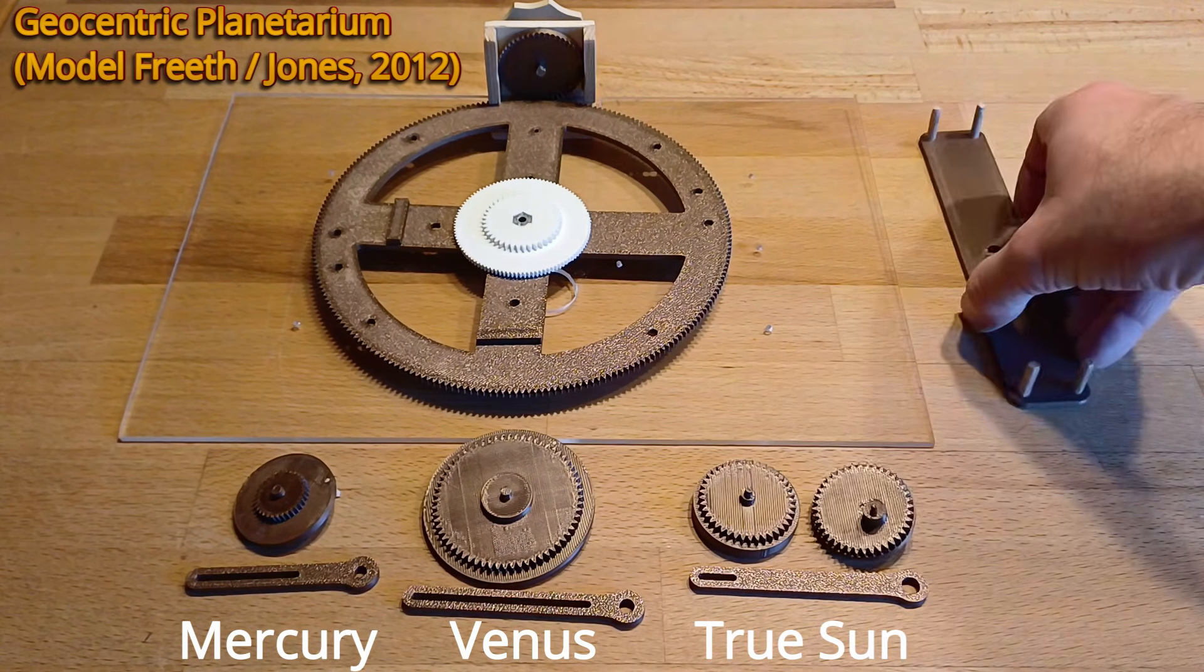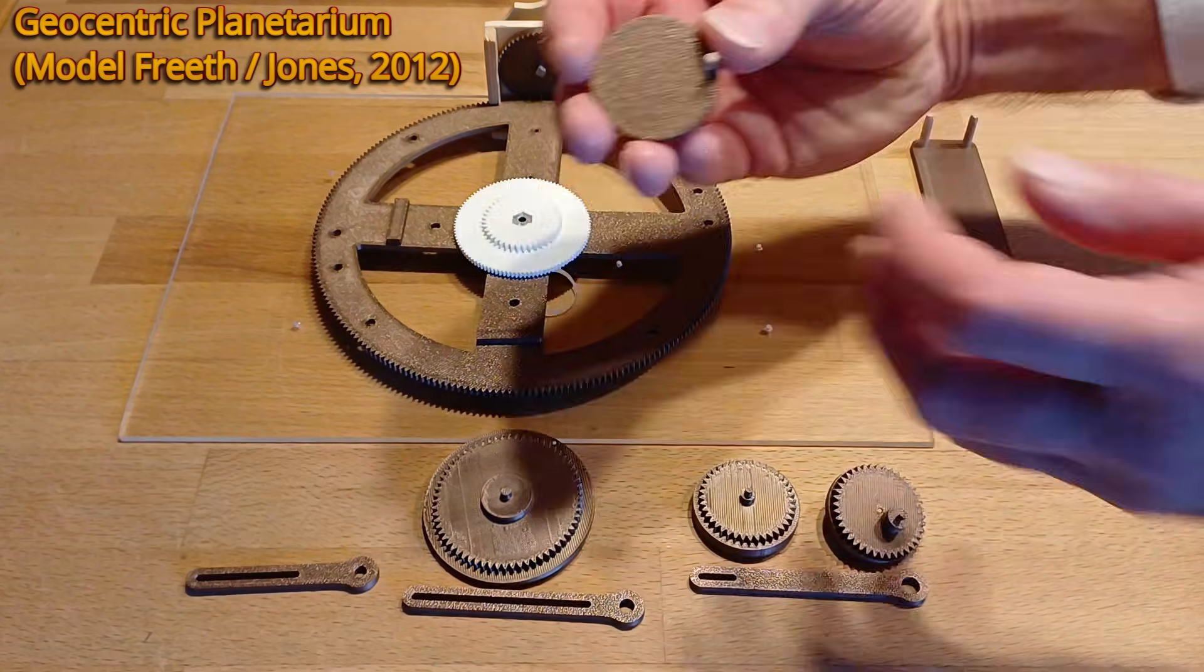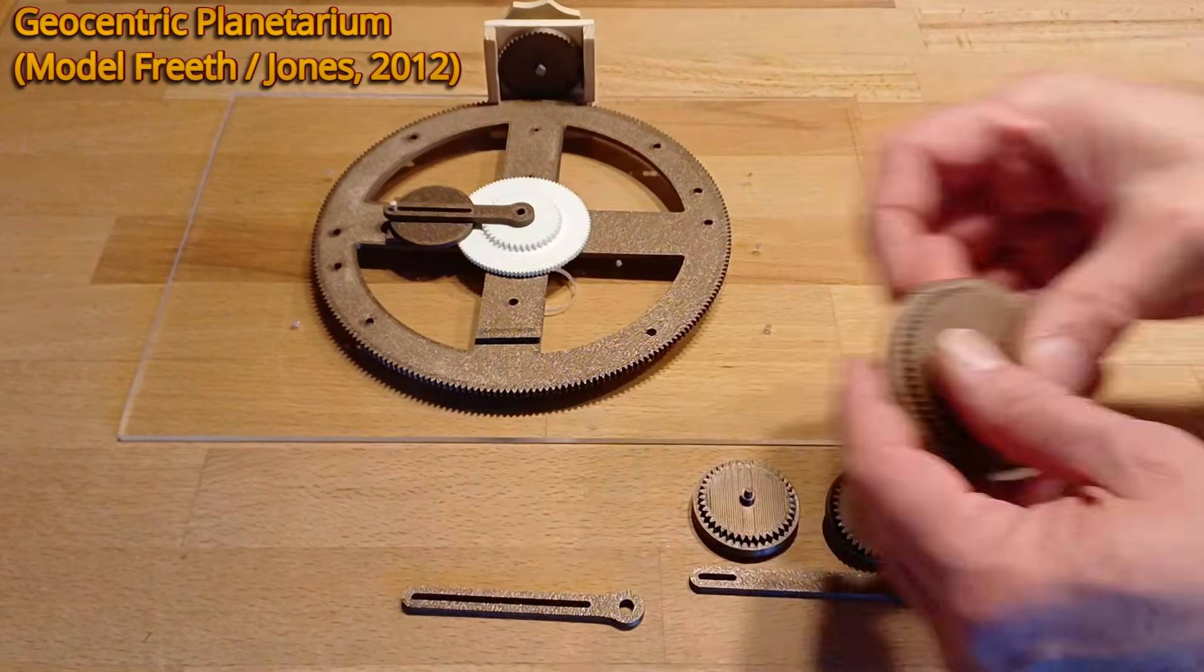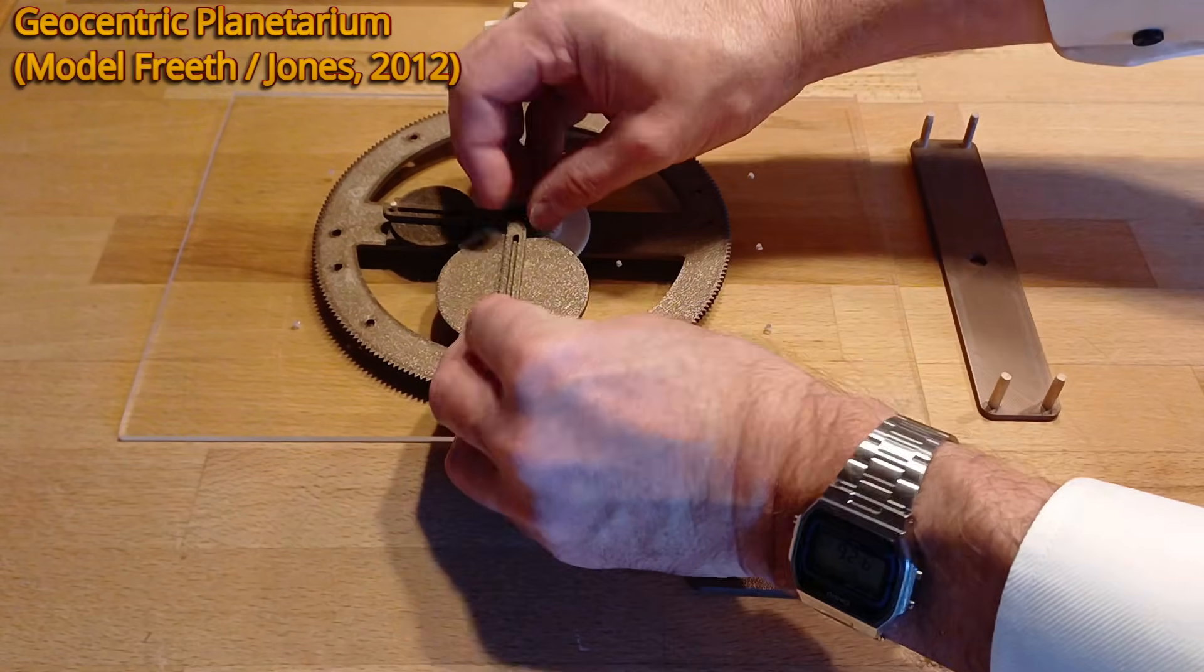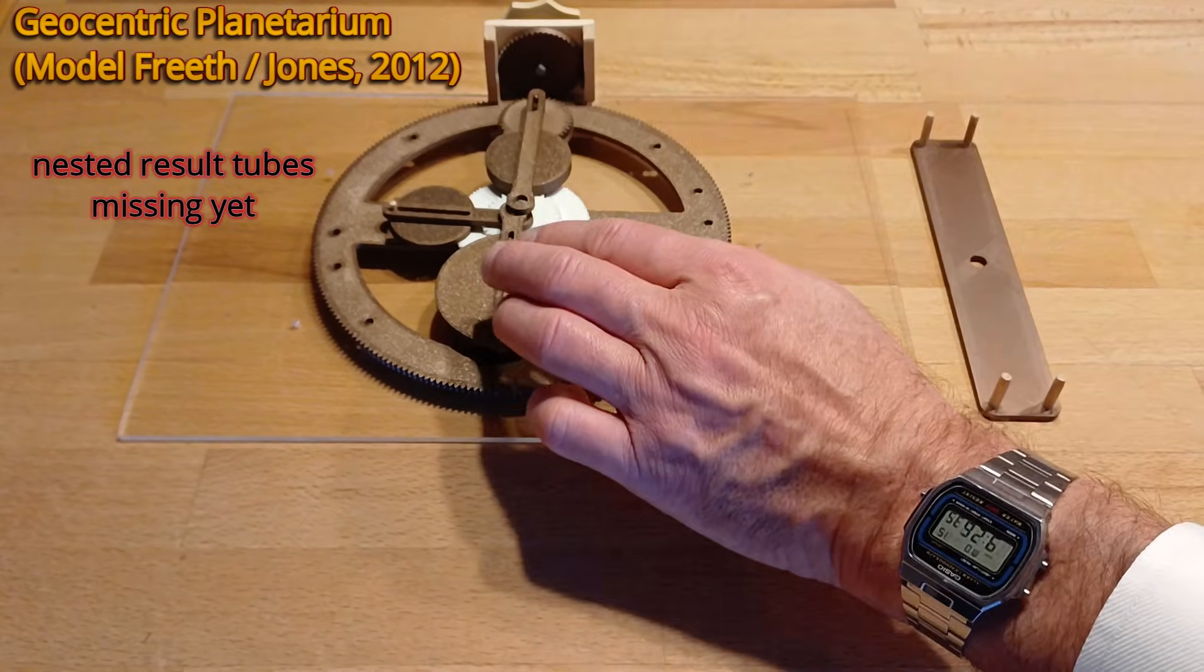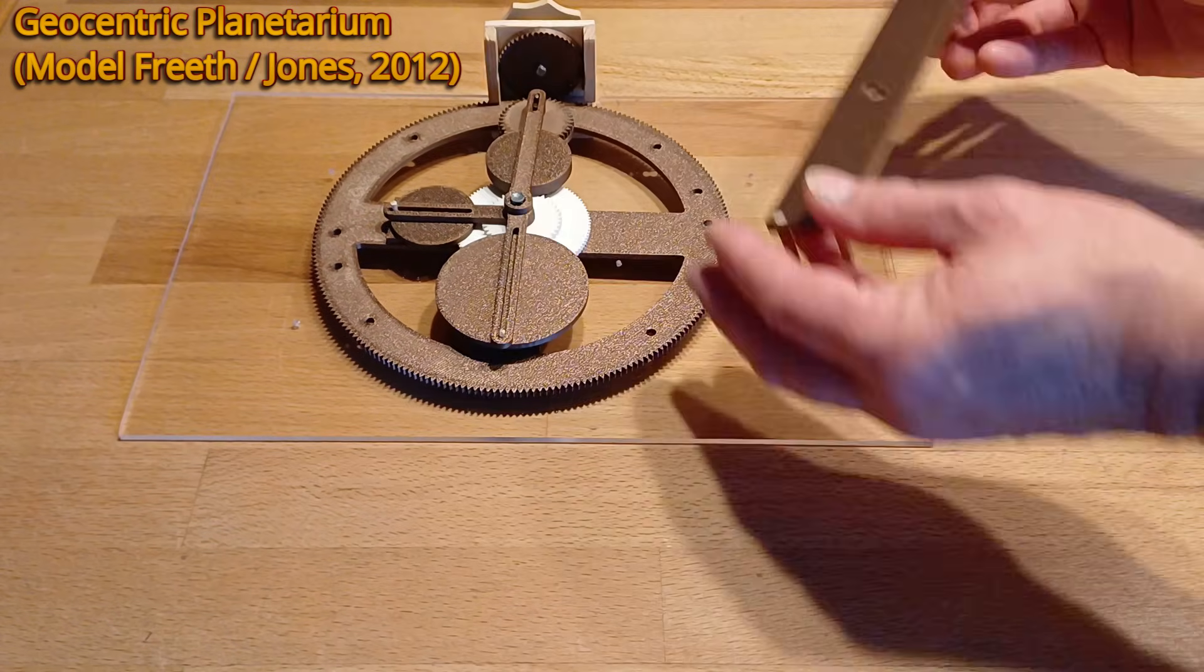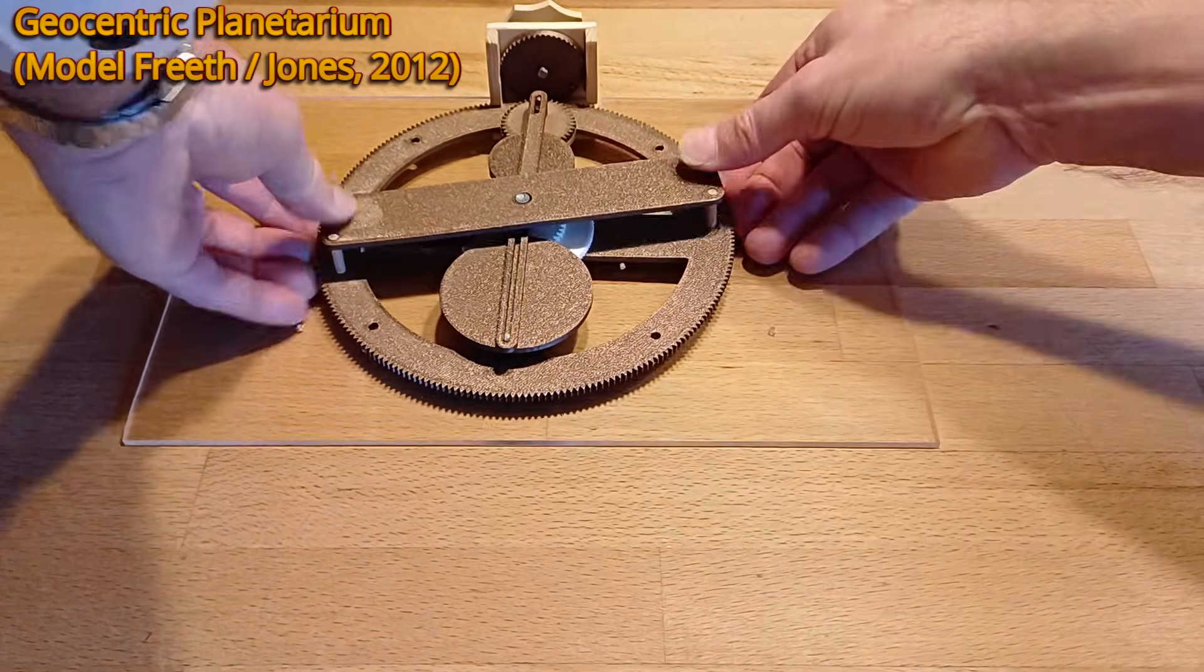Finally, the plate that closes off the inner planetary wheels at the top. I will now first assemble the Mercury wheel with the follower, then the Venus wheel and finally the two Sun wheels also with the follower. I don't have the tubes for transmitting the movements upwards to the hands yet. A small plate will be added on top as a finish.